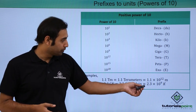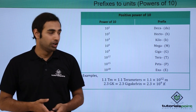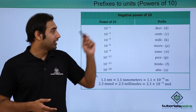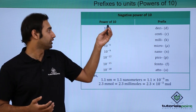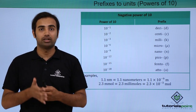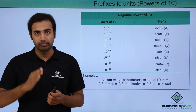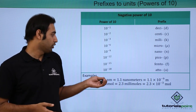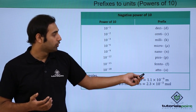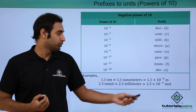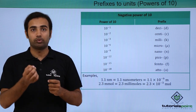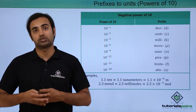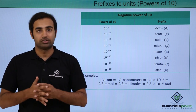We also have negative powers of 10. Deci, centi, and milli are used for 10⁻¹, 10⁻², and 10⁻³ respectively. For example, 1 centimeter is 1/100 of a meter. Similarly, 1.1 nanometers is 1.1 × 10⁻⁹ meters, written as 1.1 nm where n is the nano prefix. And 2.3 millimoles is simply 2.3 × 10⁻³ moles. This fundamental idea about prefixes must be clear.